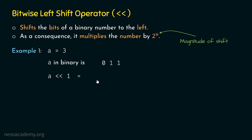The result will be 0110. All the bits are shifted left, and the vacant position is always filled by zeros. This is equal to 6 in decimal. Since the magnitude of shift is 1, we replace n by 1, and 2 to the power 1 is equal to 2. So we multiply 3 by 2 and get 6 as the result, which is exactly what we are getting.